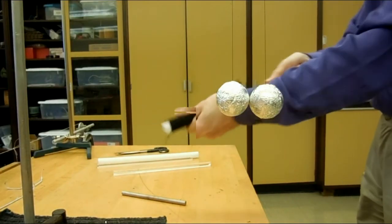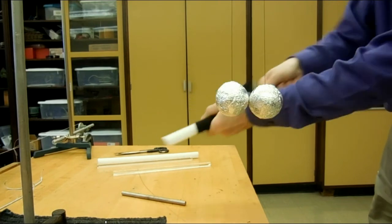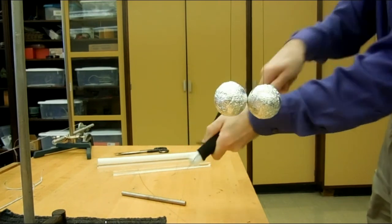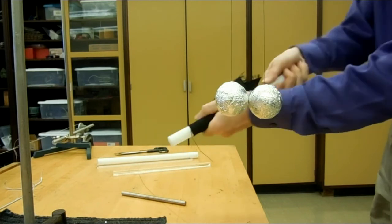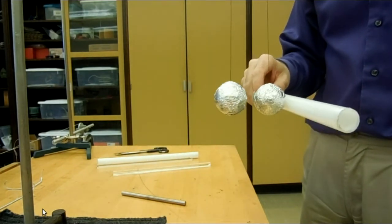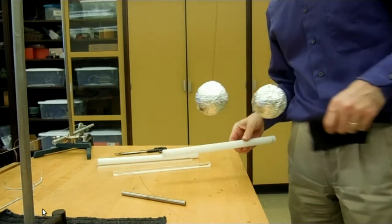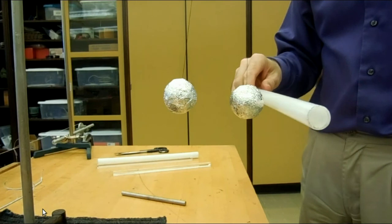Here are two ping pong balls covered with aluminum foil, and you can tell from the fact that they're hanging straight from their strings that they're not repelling or attracting each other. And I'm charging a plastic rod using wool. When I touch the rod to one of the balls, now the balls repel each other. Let's see that again in slow motion.